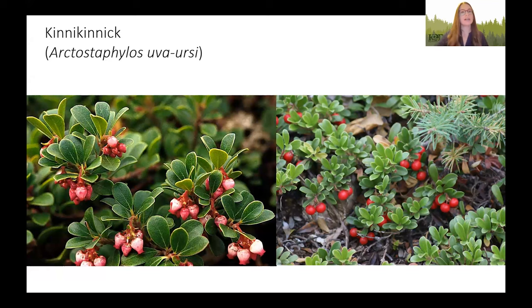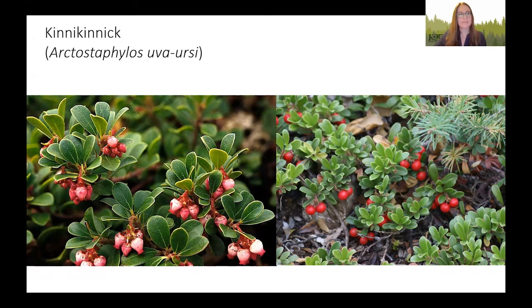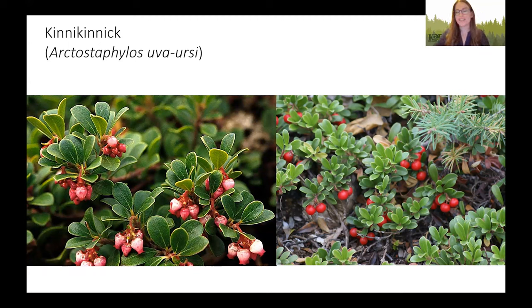Now we're in our ground cover section. First is kinnikinnick — a fun word to say, a challenge to spell. It's an evergreen trailing ground cover that can form thick mats, though the stems are still somewhat woody. It likes sandy, well-drained soils and can cascade over a rock wall, which is quite pretty. The berries are edible but a bit mealy and bland. They ripen late in the season and can stay on the plant throughout the winter, giving a little festive red and green to your yard. I've actually seen it used as a complete grass substitute for an entire yard — it was beautiful.